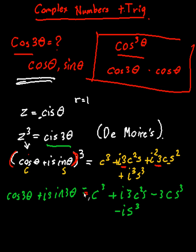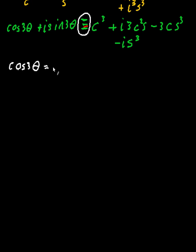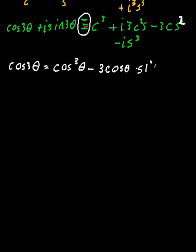It's a simple matter of equating the two sides — I'd say equivalence rather than equation. Equating the real terms and imaginary terms separately: cos 3θ equals c³ — or rather cos³θ — minus 3 cos θ sin²θ. So there we have it — this is the key use of complex numbers to evaluate trigonometric expressions.